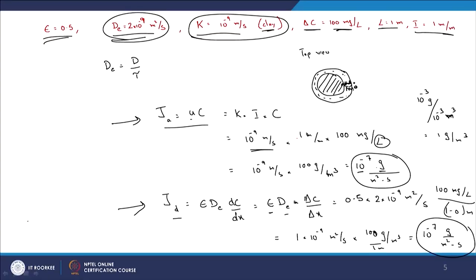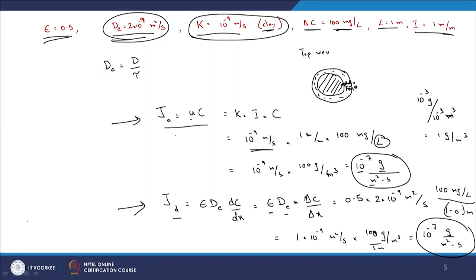What this tells us is that 10⁻⁷ grams of the relevant contaminant will be transported through a square meter of the barrier per second. To understand flux intuitively: think of a door that is open with wind blowing dust in. How much mass is coming through that door per unit time? That is flux — how much mass of dust comes through that particular area per time. That gives you an idea about the transport.